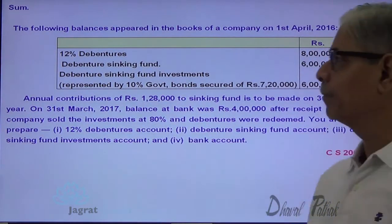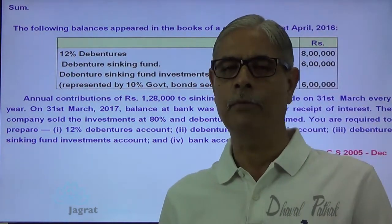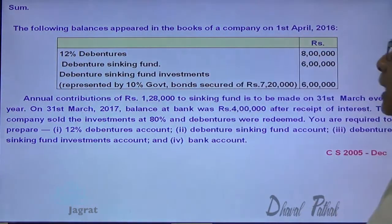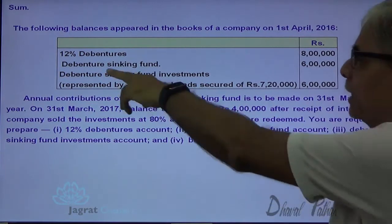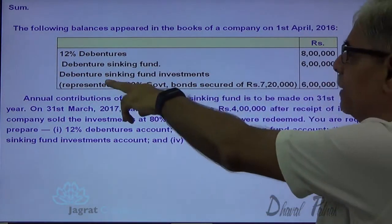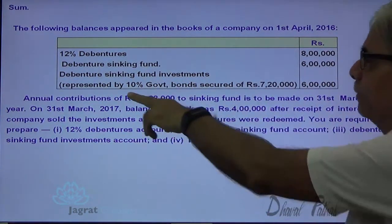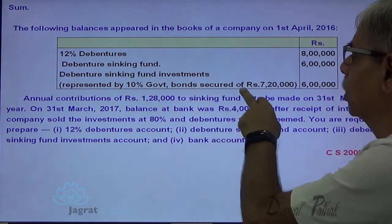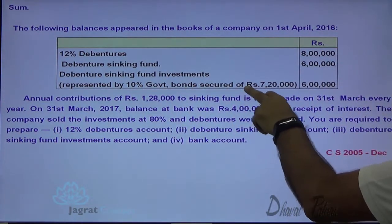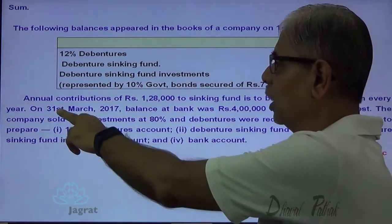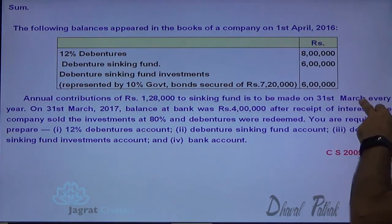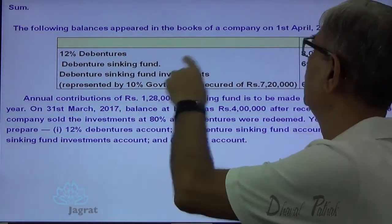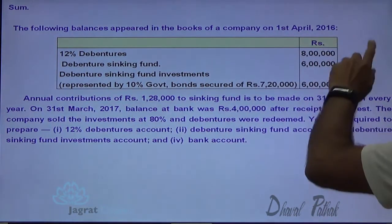This is the sum which I wish to solve here before you. The following balances appeared in the books of the company as on 1st of April 2016: 12% debentures, debenture sinking fund 6 lakhs, debenture sinking fund investment 6 lakhs, represented by 10% government bond secured Rs. 7,20,000. Annual contribution of 1,28,000 to sinking fund is to be made on 31st of March every year. These are the balances on 1st of April 2016.